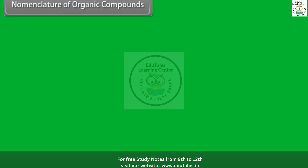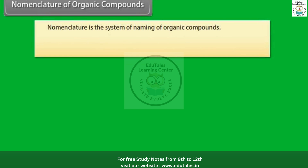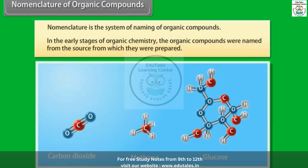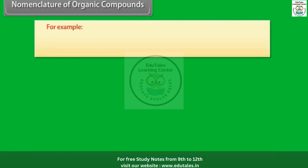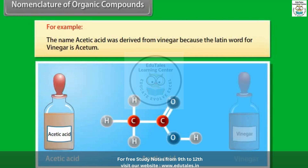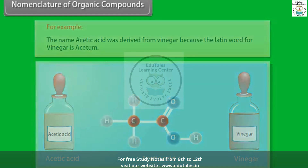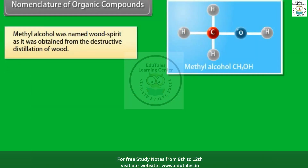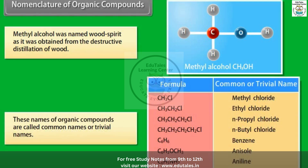Nomenclature of organic compounds: Nomenclature is the system of naming organic compounds. In the early stages of organic chemistry, compounds were named from the source from which they were prepared. For example, the name acetic acid was derived from vinegar, because the Latin word for vinegar is acetum. Methyl alcohol was named wood spirit, as it was obtained from the destructive distillation of wood. These names are called common names or trivial names.